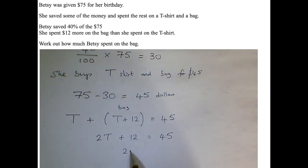Now if I take 12 away from both sides, I'm left with two t-shirts, it costs $33. And therefore if I halve that 33, I get one t-shirt, it costs $16.50.